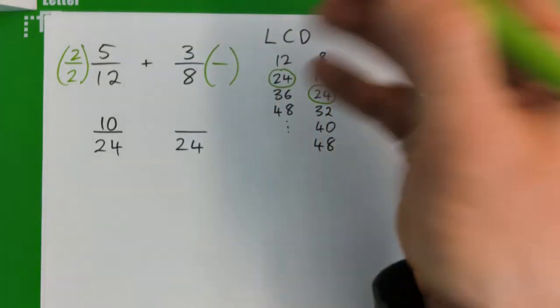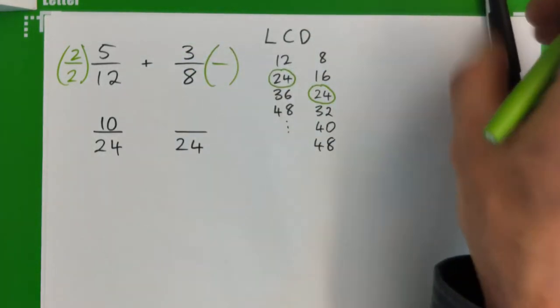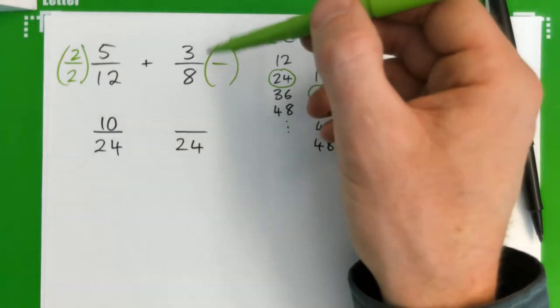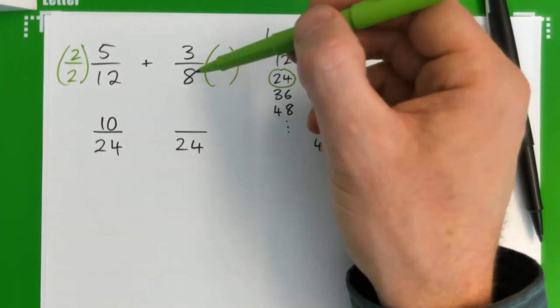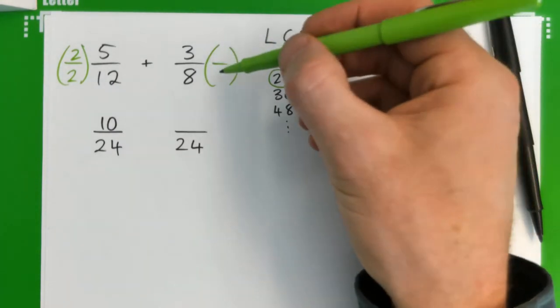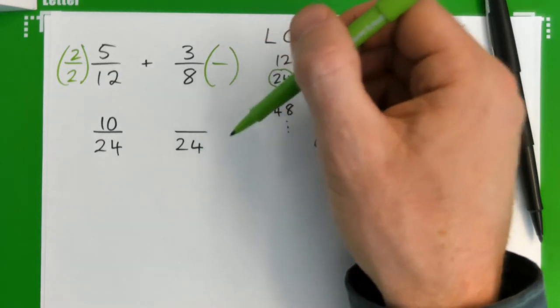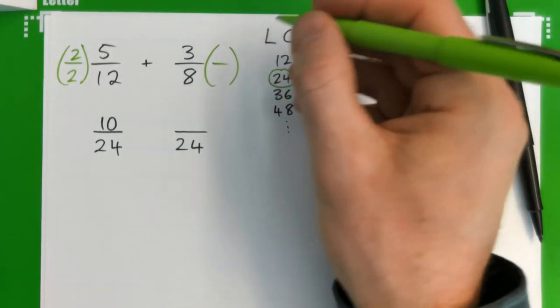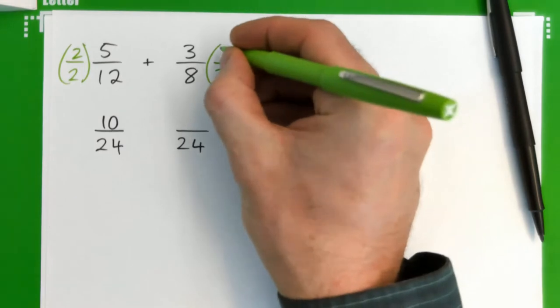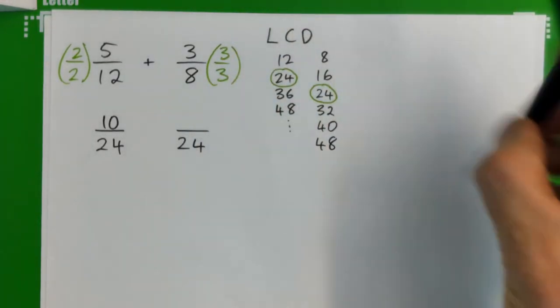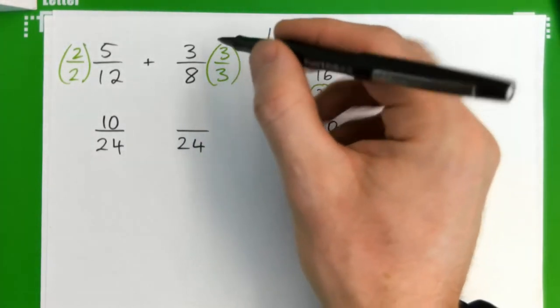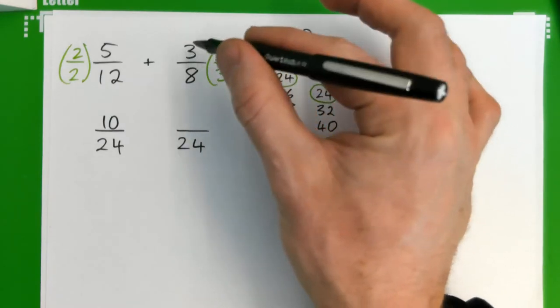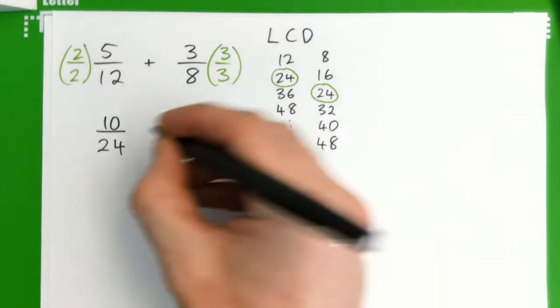It's the same quantity, but it just looks different. Different type of fraction. So, 3 eighths, you've got to multiply 8 by what to get 24? 3 on the top and bottom. So the 3 eighths becomes 3 times 3, 9 24ths.